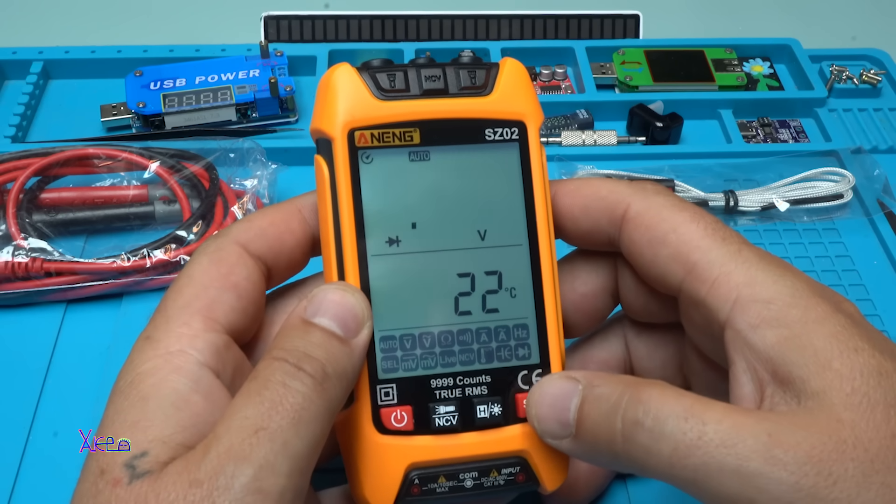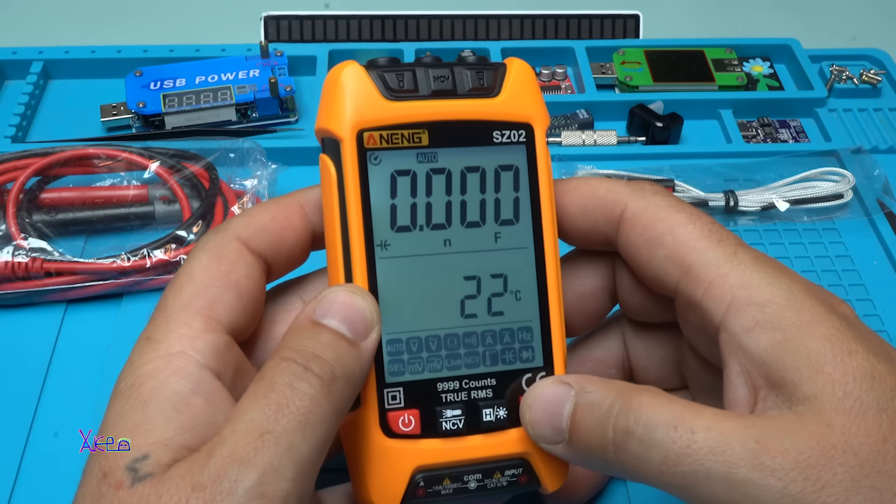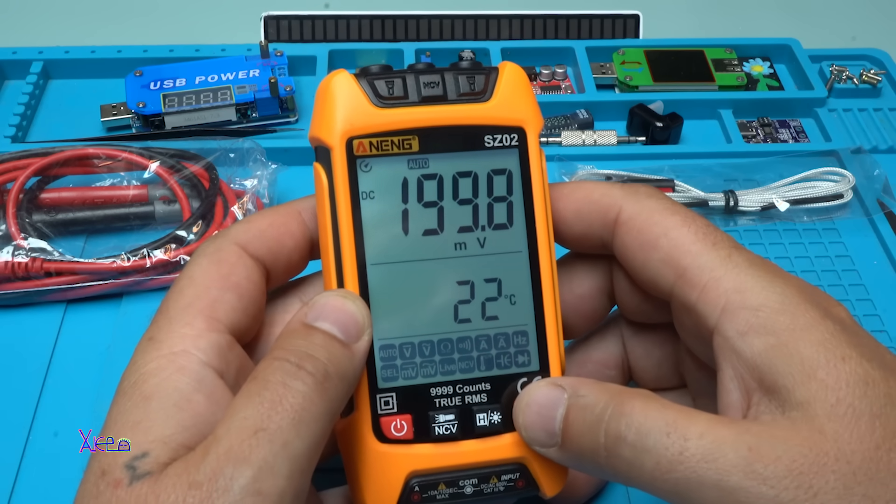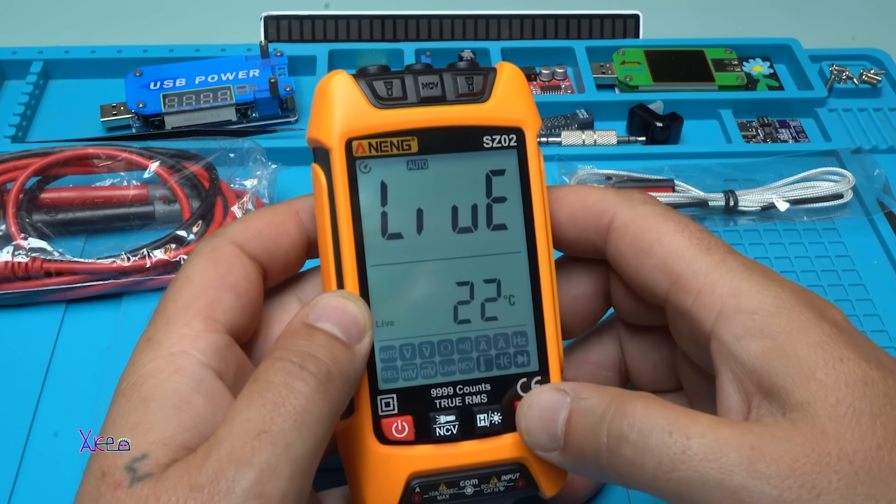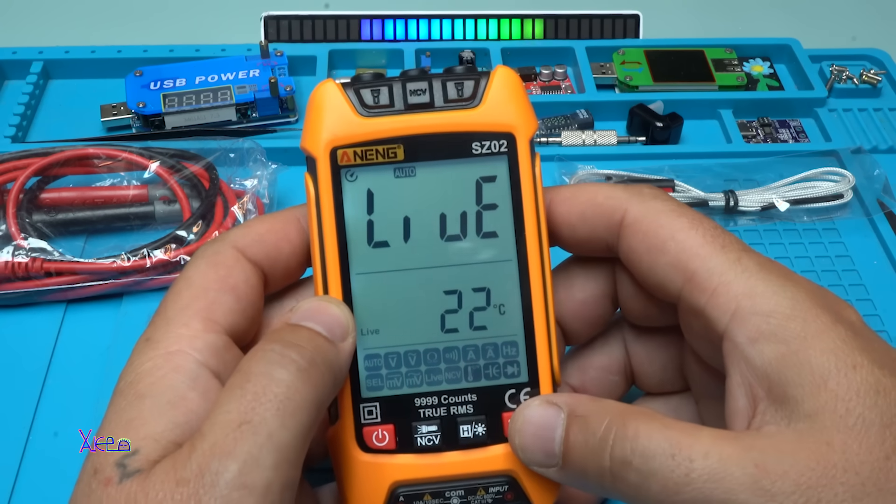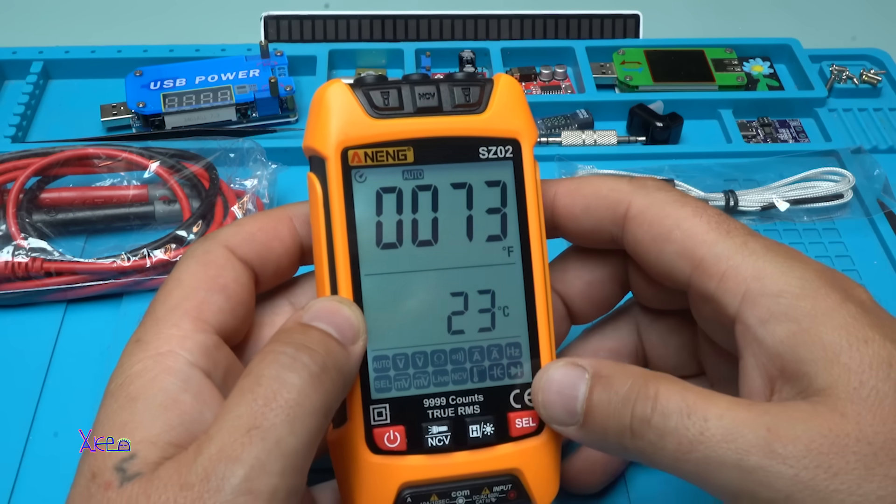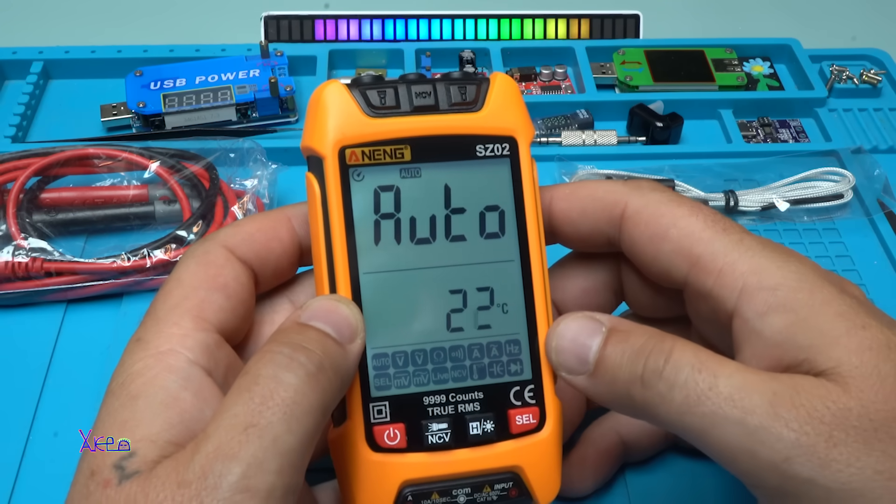Continuity. Diodes. Capacitance. What is this? DC millivolts. AC. Live. You can check live wires. And this one is for measuring the temperature. And back to auto.